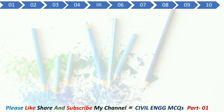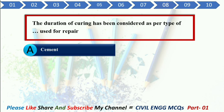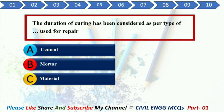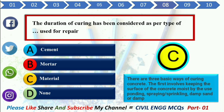Q8. The duration of curing has been considered as per the type of dash used for repair. Option A: Cement. Option B: Mortar. Option C: Material. Option D: None. Your correct answer is Option C: Material. Explanation: There are three basic ways of curing concrete. The first involves keeping the surface of the concrete moist by the use of ponding, spraying, sprinkling, damp sand, or damp coverings.